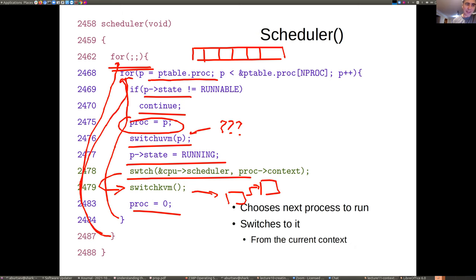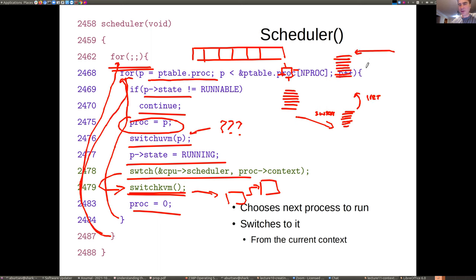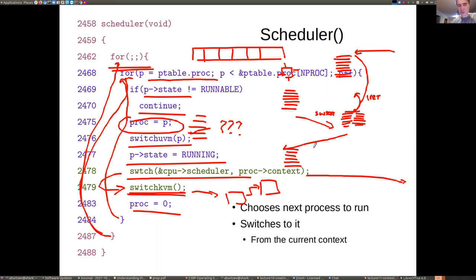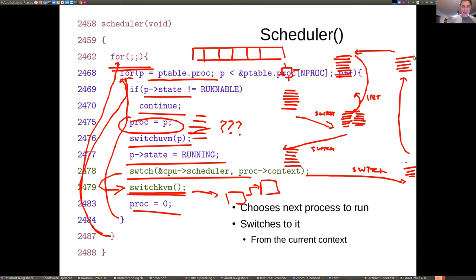Each CPU has its own per-CPU scheduler — it's a per-CPU data structure. Every time we access an element of the CPUs array, we look up an ID. The kernel stack for the scheduler was created when we first called main on the CPU — that's essentially the scheduler's stack. When the scheduler switches for the first time, it saves the scheduler context and switches into the very first process. The overall flow is: scheduler → process → back to scheduler → pick next process → switch again.